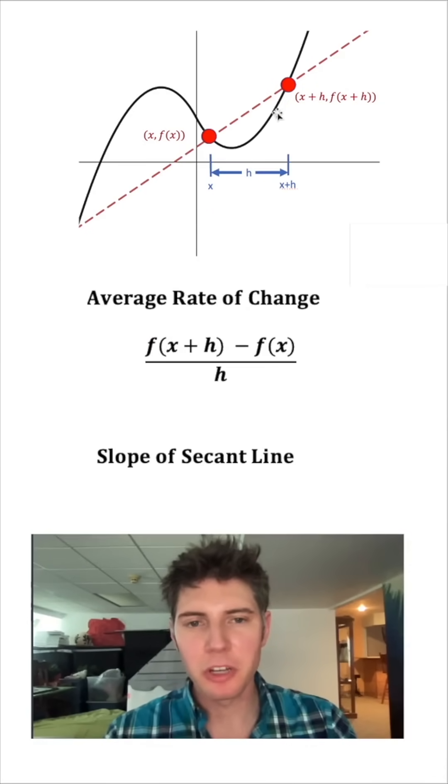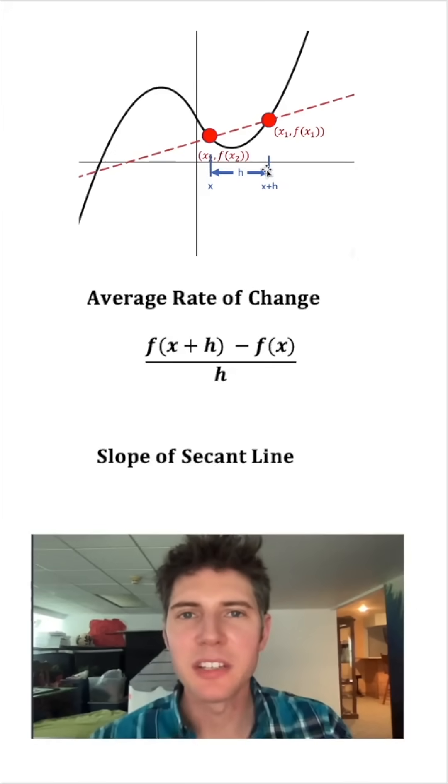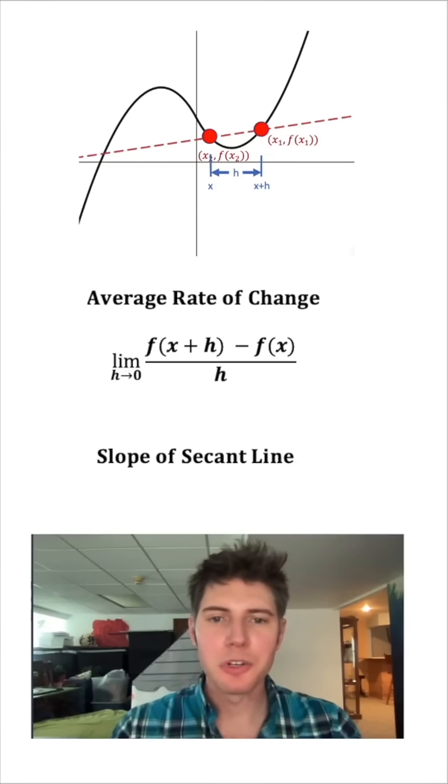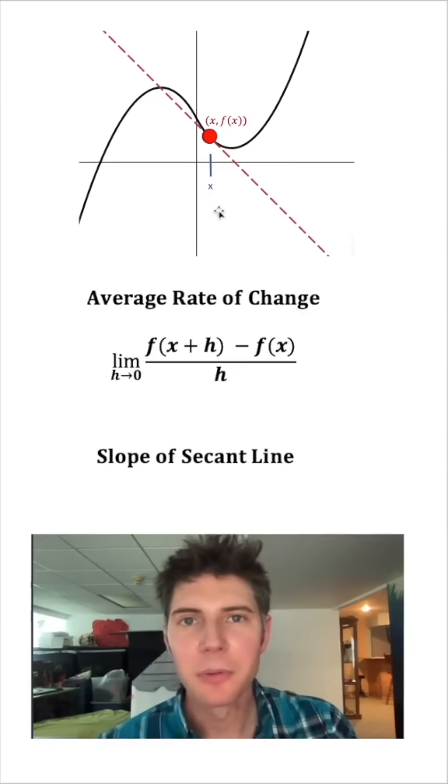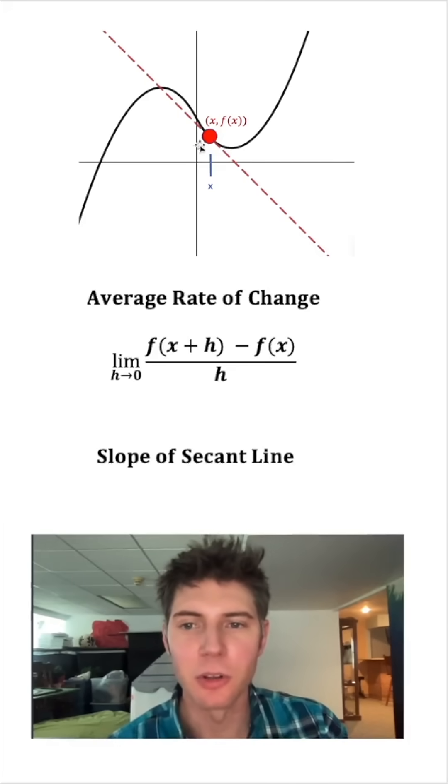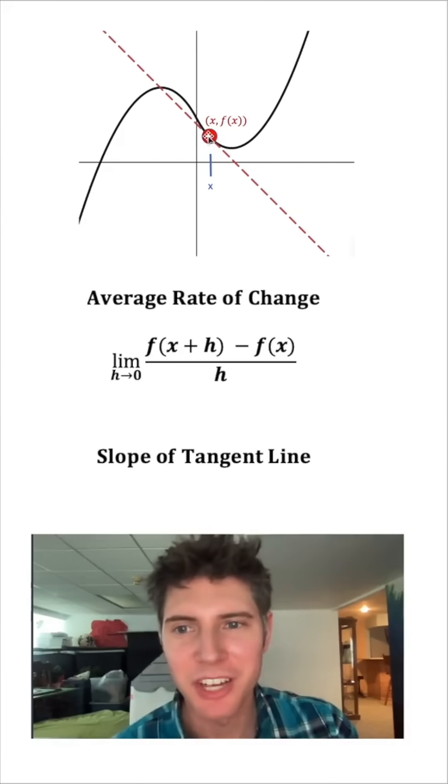But let's start to move this point closer to this point. So our h is gonna start getting smaller. Let's go all the way till h gets to zero. And the way we write that in our formula is we write the limit as h approaches zero. And we're gonna keep shrinking the h and getting the points closer and closer together until we get to h equals zero. And now that we're here at h equals zero, that means there's only one point. This line is no longer called a secant line. It's called a tangent line. And this point is called the point of tangency.